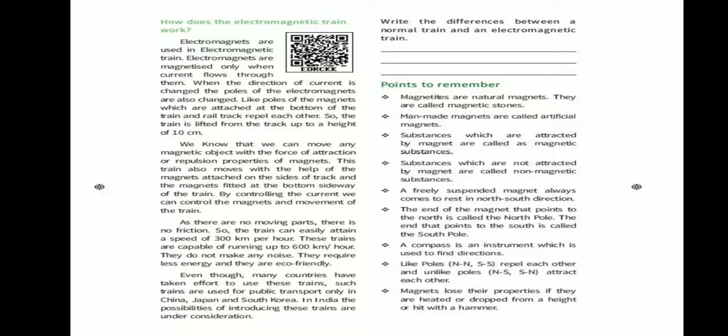As there are no moving parts, there is no friction, so the train can easily attain a speed of 300 km per hour. These trains are capable of running up to 600 km. They do not make any noise, they require less energy, and they are eco-friendly. Many countries have taken efforts to use these trains. Certain trains are used for public transport only in China, Japan, and South Korea. In India, the possibilities of introducing these trains are under consideration.